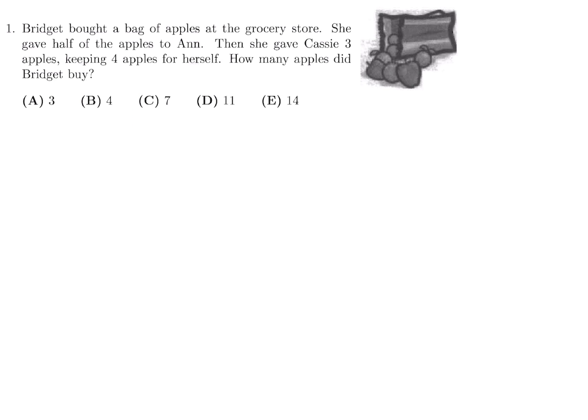Bridget bought a bag of apples at the grocery store. She gave half of the apples to Ann. Then she gave Cassie three apples, keeping four apples for herself. How many apples did Bridget buy?